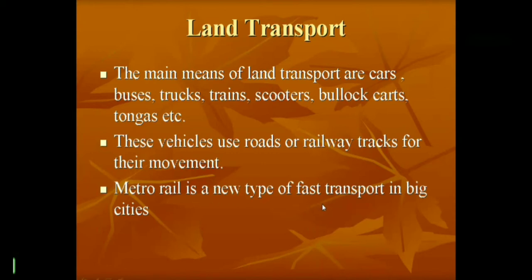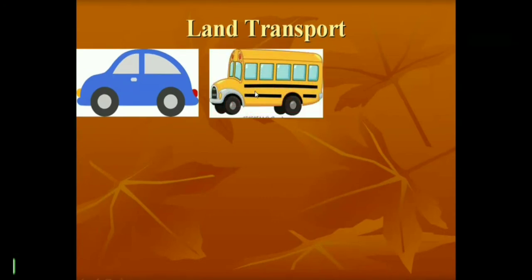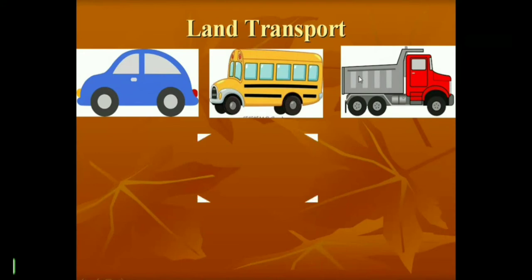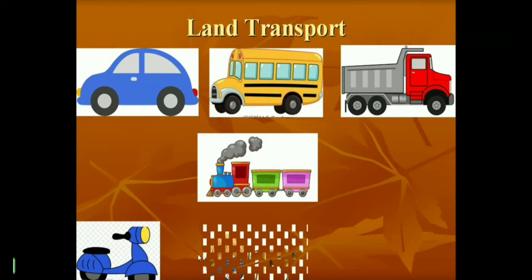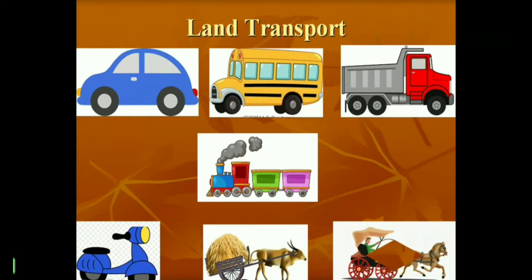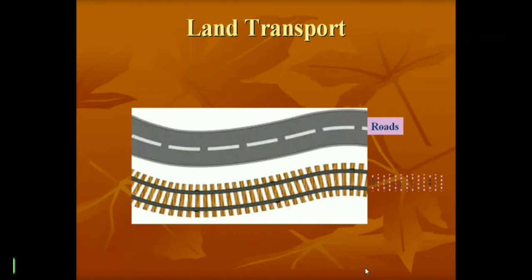Metro rail is a new type of fast transport in big cities — metro rail is known as the lifeline of Delhi. Examples of land transport vehicles include car, bus, truck, train, scooter, bullock cart, and tonga. All these use roads or railway tracks.